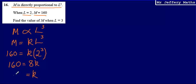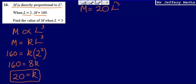160 divided by 8 is going to give me 20. So I now know that in order to figure out what M is going to be, I would just have to multiply L cubed by 20. So I'm going to rewrite this as a formula. M is equal to 20 multiplied by L cubed. So M is equal to 20L cubed.